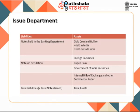The liabilities of the Issue Department comprise the vault cash in the banking department and the notes issued to the public, banks and treasuries under Section 22 of the Reserve Bank of India Act 1934. The assets eligible to back the issuance of notes under Section 33 include gold coin and bullion, eligible foreign securities, Government of India rupee securities, rupee coins, and eligible internal bills of exchange and other commercial paper. As the Reserve Bank acts as agent of the central government in the issue, distribution and handling of rupee and small coins under Section 38, inventories are held in the Issue Department.